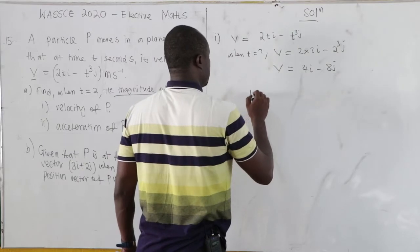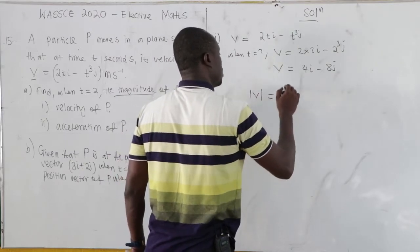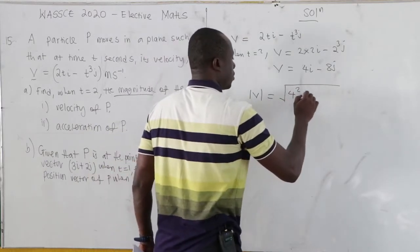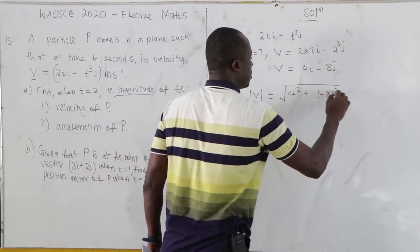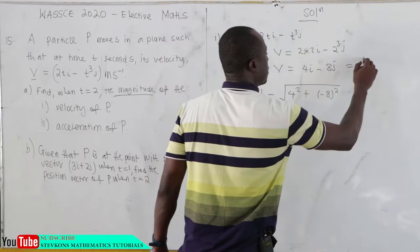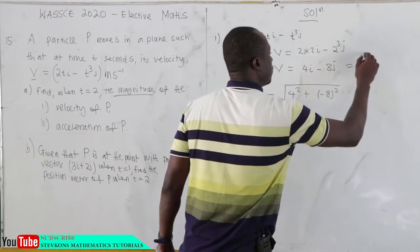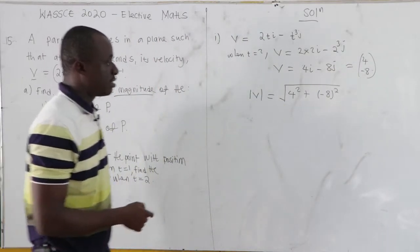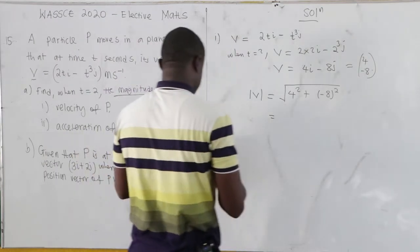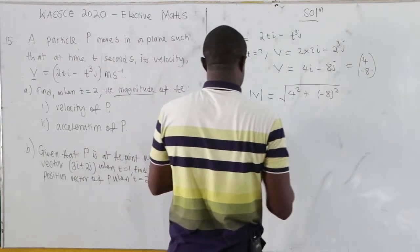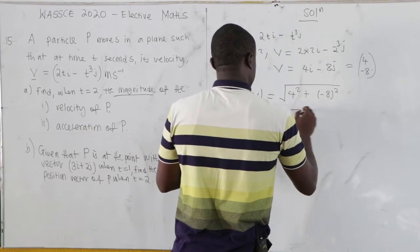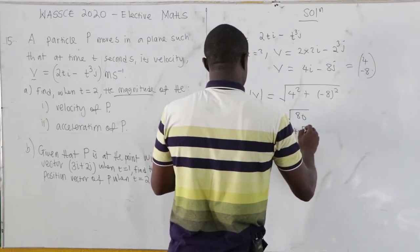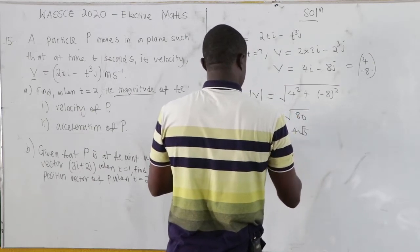The magnitude becomes the square root of 4 squared plus negative 8 squared, because we can rewrite this as (4, -8). Working it out, this gives us the square root of 80, which is the same as 4 root 5, and that is approximately 8.94 meters per second.